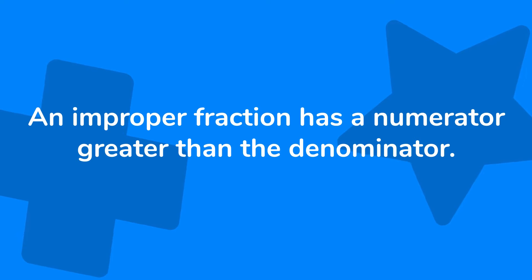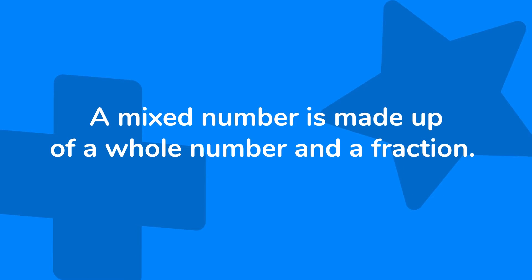As a reminder, an improper fraction has a numerator greater than the denominator. A mixed number is made up of a whole number and a fraction.